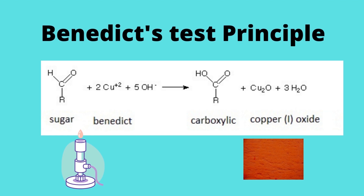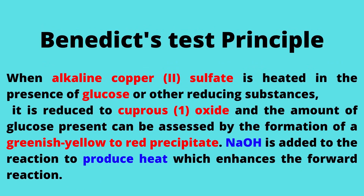Principle: when alkaline copper sulfate is heated in the presence of glucose or other reducing substances, it is reduced to cuprous oxide. The amount of glucose present can be assessed by the formation of an orange, yellow to red precipitate. Sodium hydroxide is added to the reaction to produce heat, which enhances the reaction.